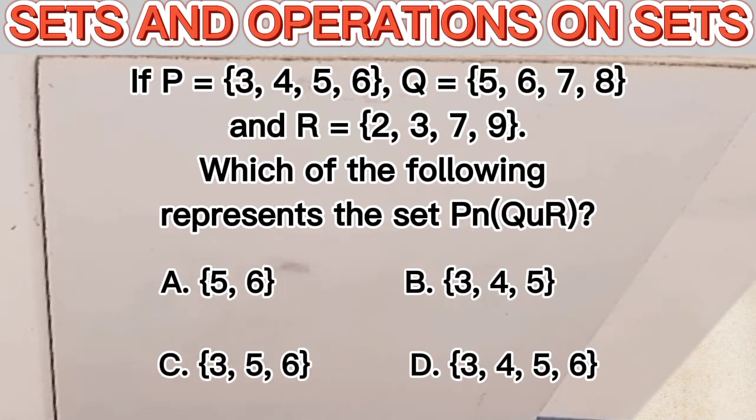And the options given to us are A is 5 and 6, B is 3, 4, 5, C is 3, 5, 6, and then D is 3, 4, 5, 6.